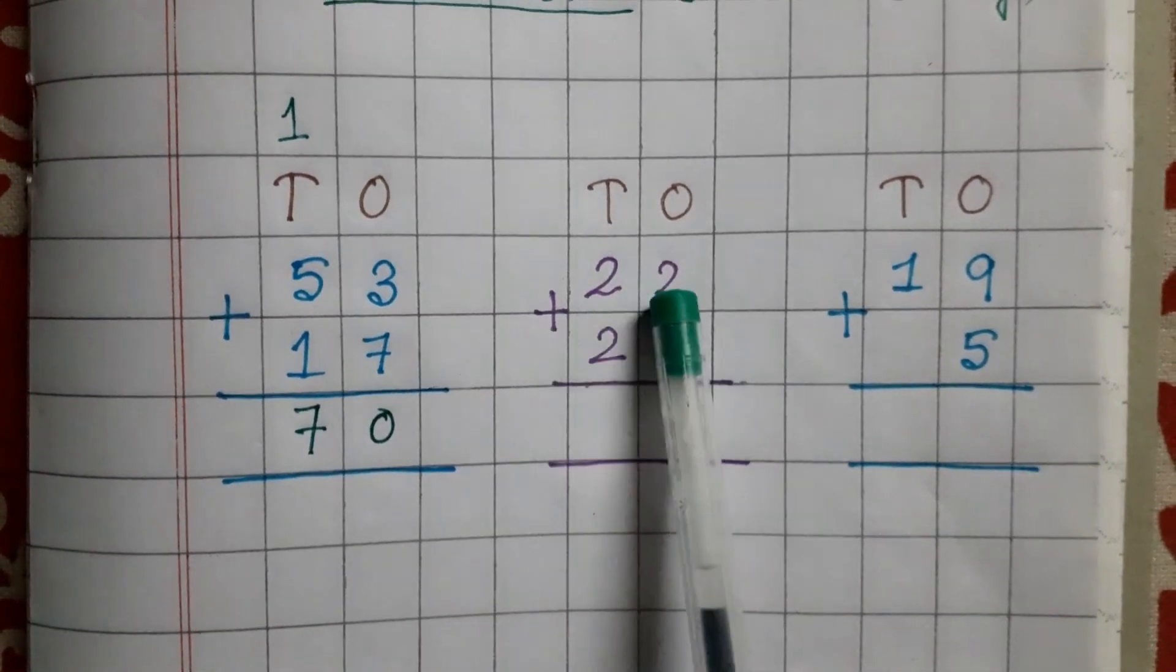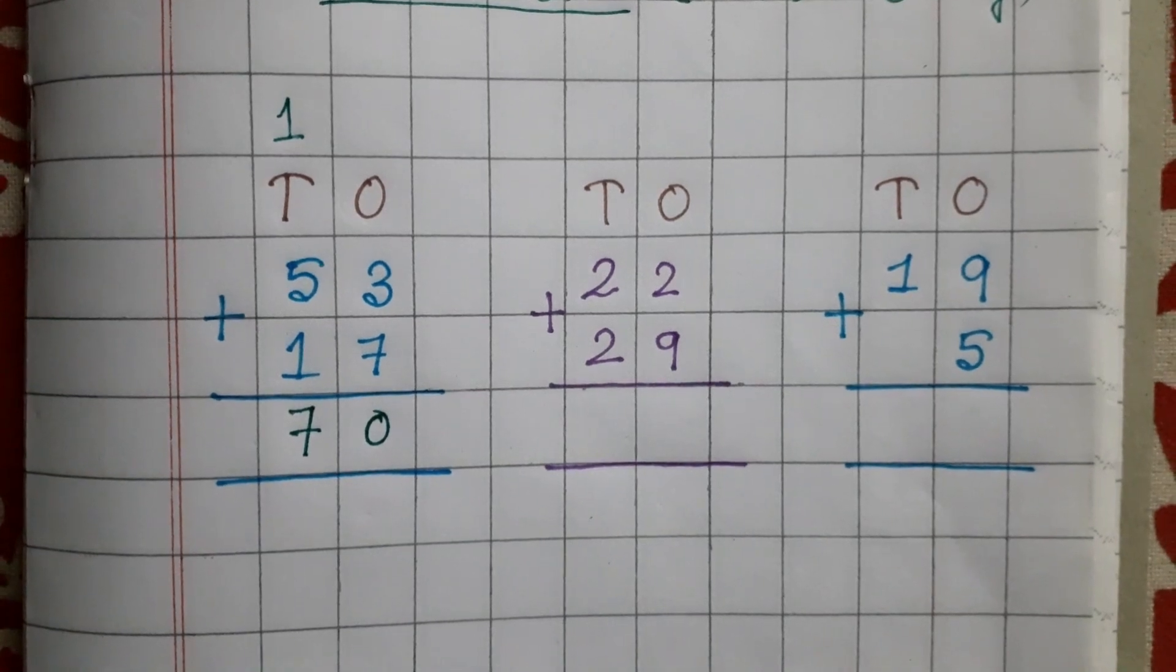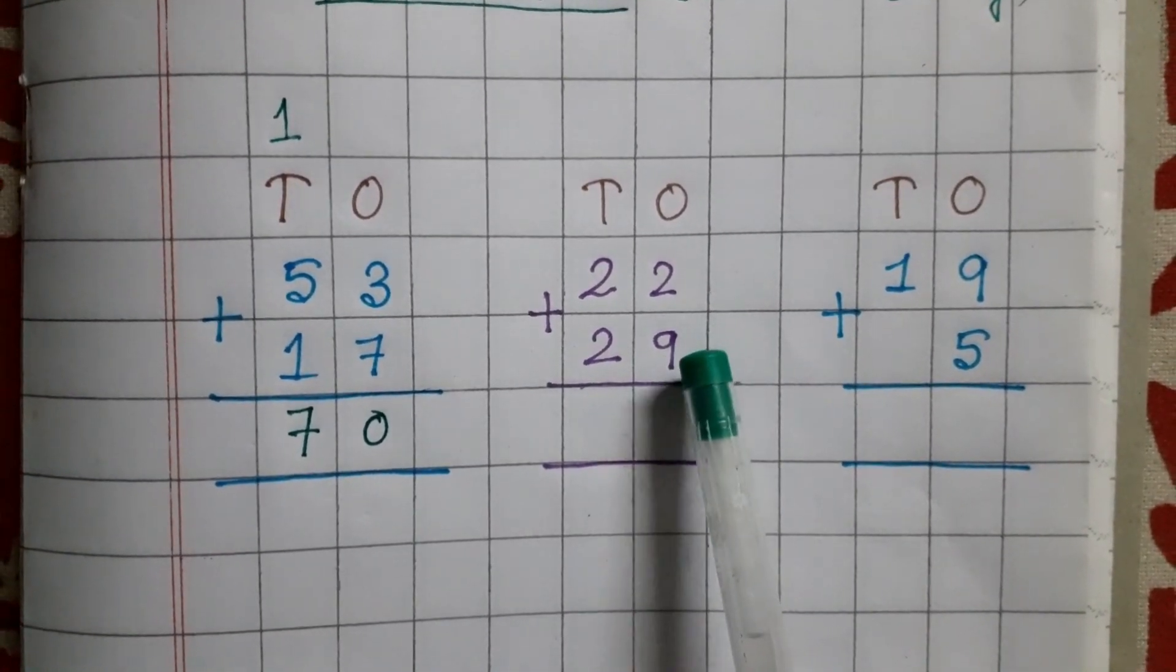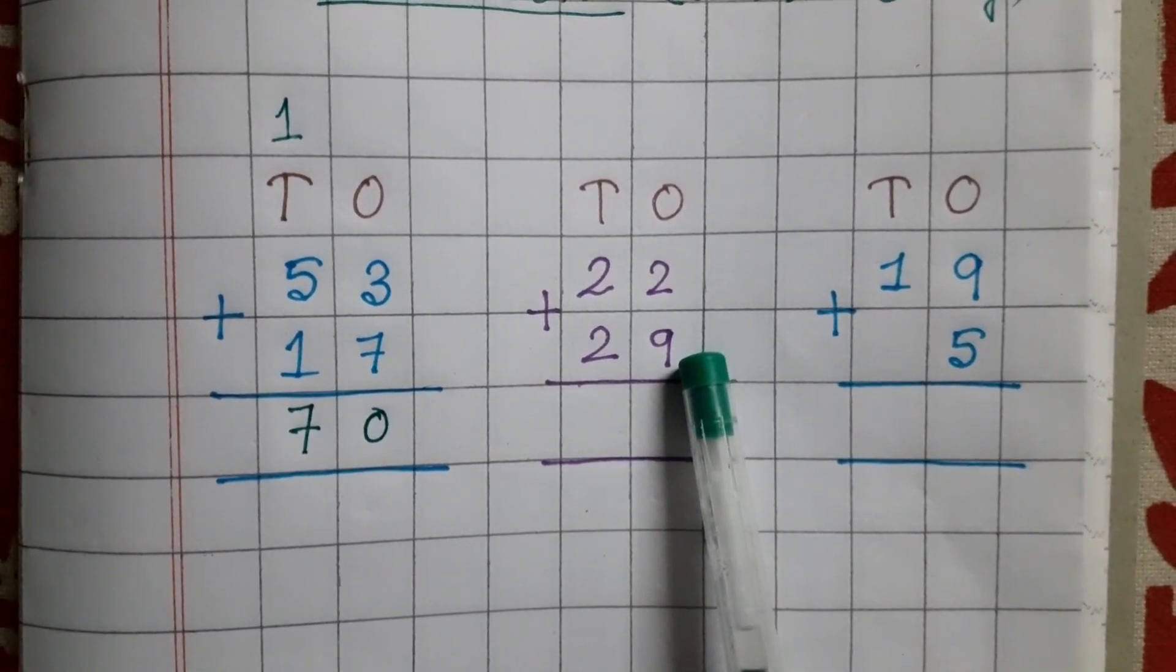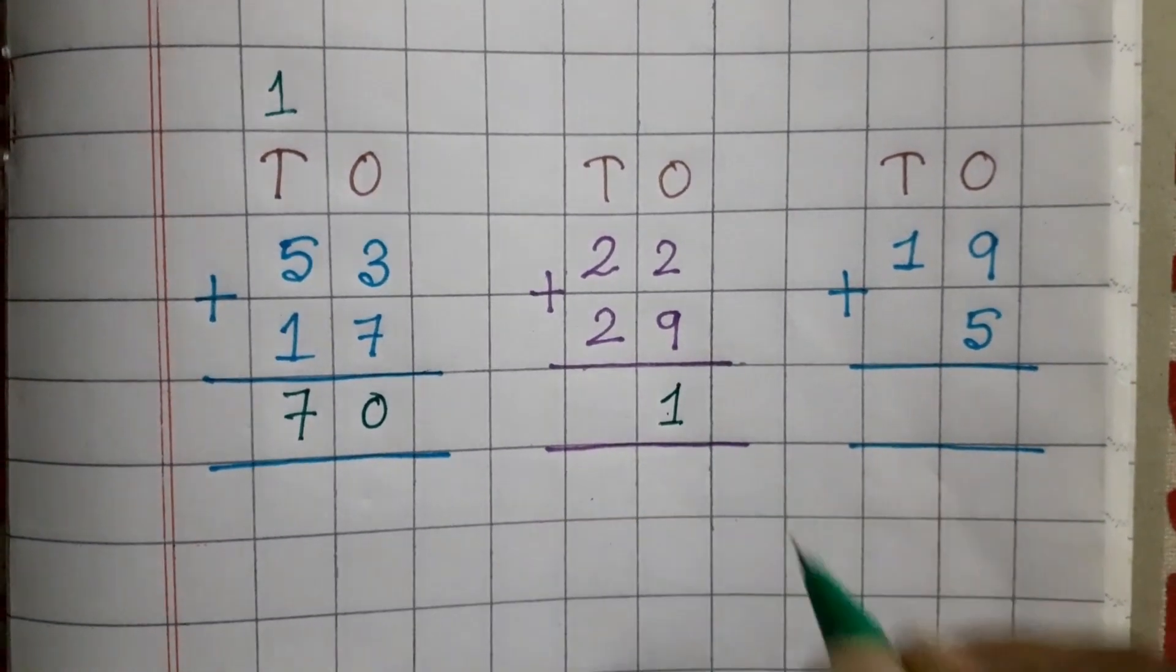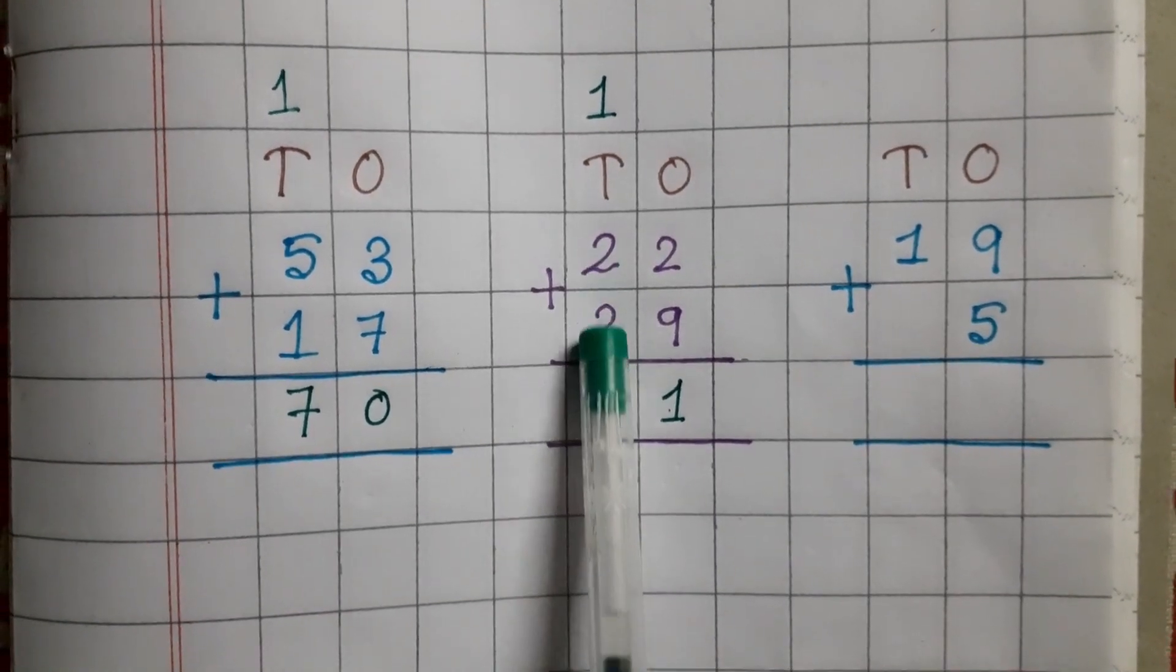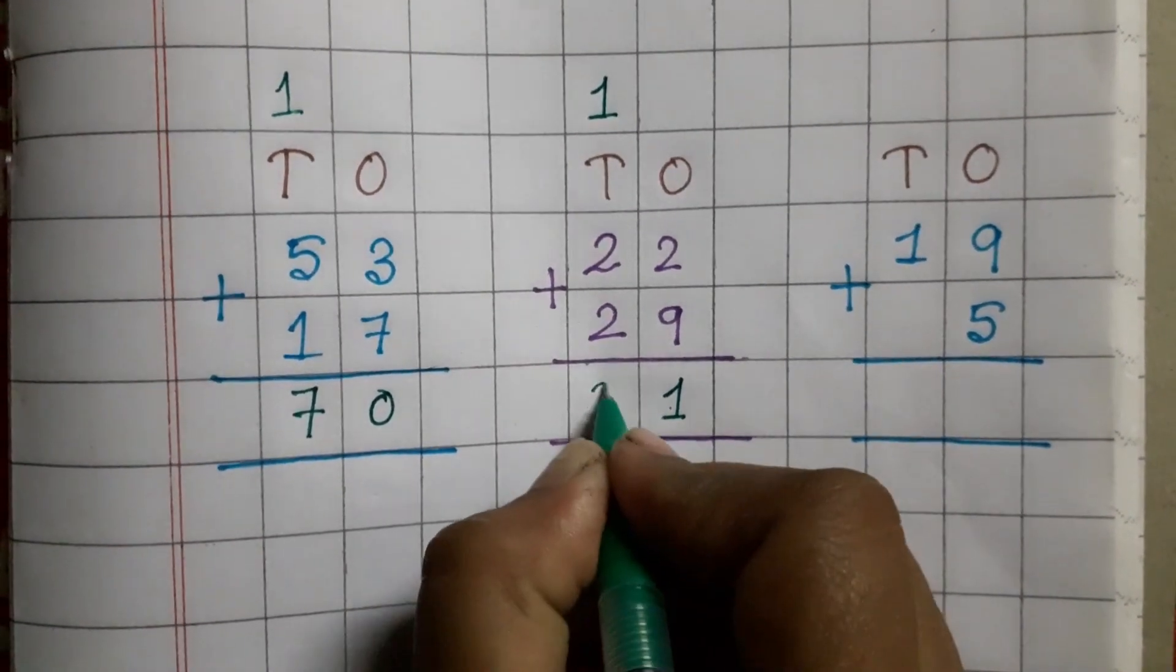Now the next one. 2, 2, 22. 2, 9, 29. 22 plus 29. So under 1s, we have 2 and 9. Let's add them. After 9, go 2 house. After 9, we get 10, 11. So how much you are getting? 11. You will write only 1 here and another 1 will move here as carry forward. After that, you have to add these two numbers. 2 plus 2 becomes 4 and this one will become 5, okay?